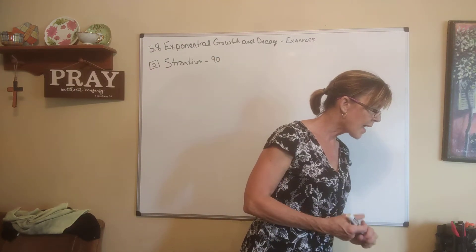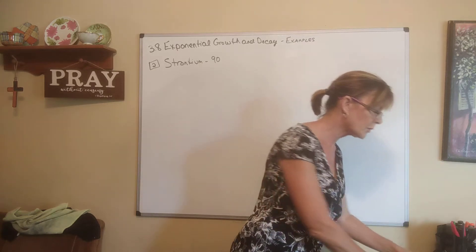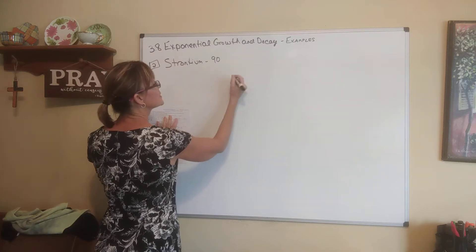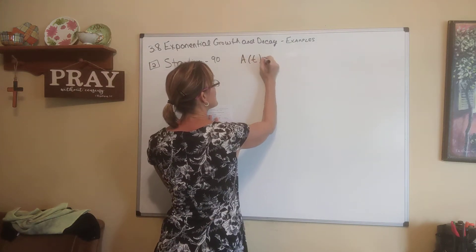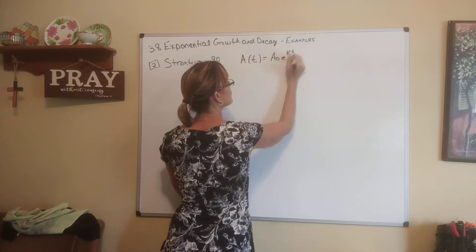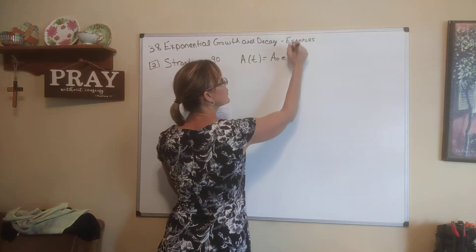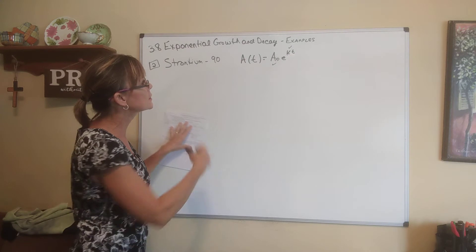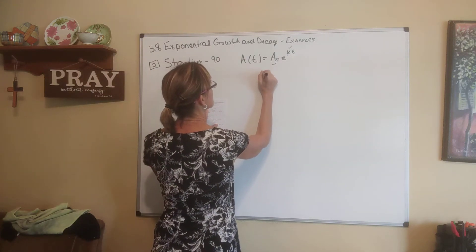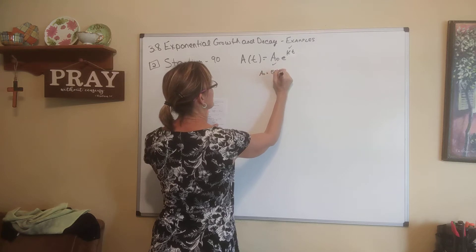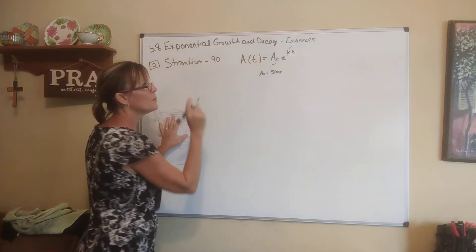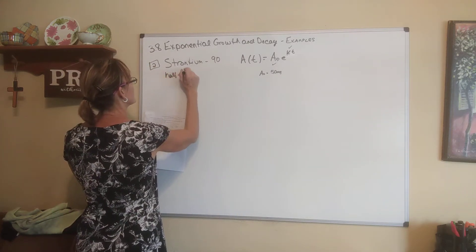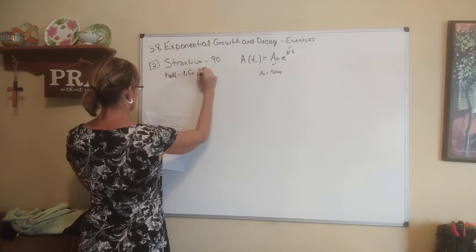The problem says a mass of 50 milligrams initially — find the formula for the mass after T days. Since we know it's exponential, we know this is the form we have to write. For this to be a working equation, we need to know k. They told us the initial amount, A-sub-zero, was 50 milligrams. We have to find k, but we can find k because they told us the half-life is 28 days.